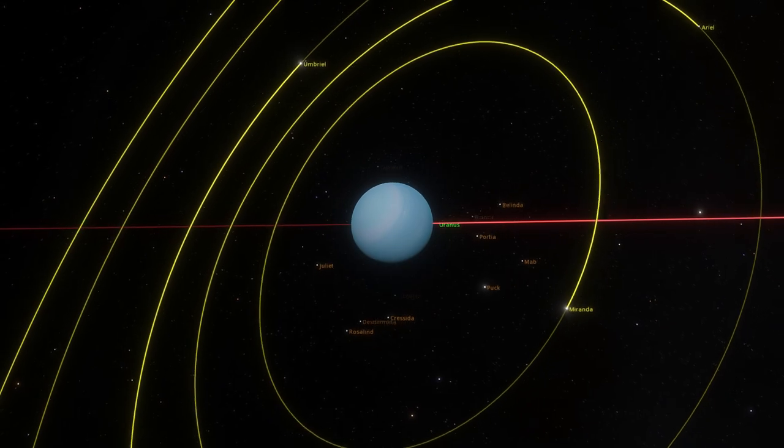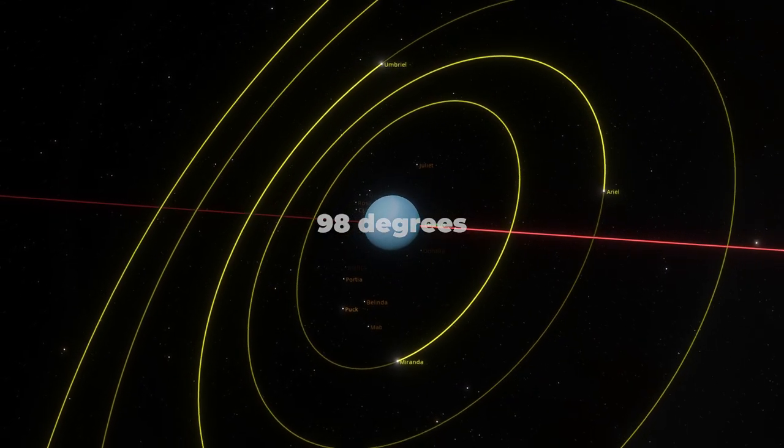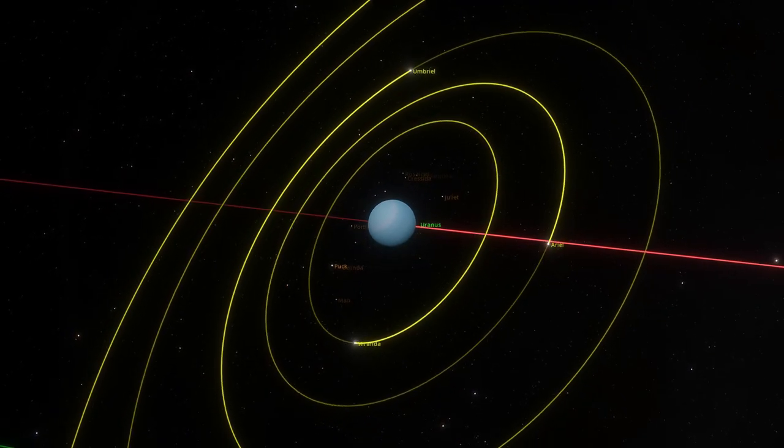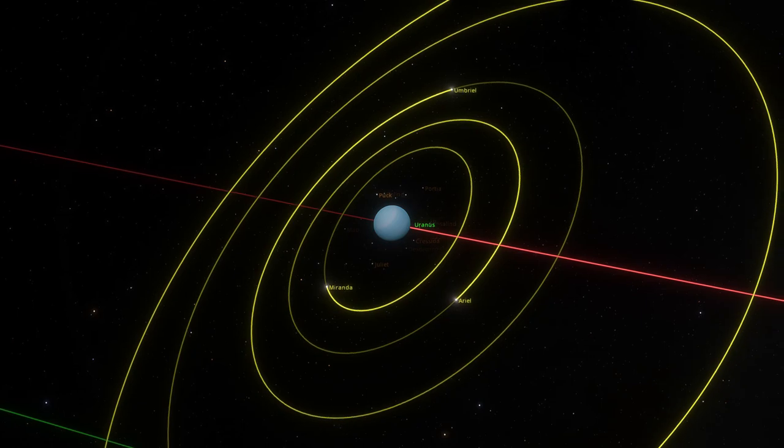However, Uranus is the most mysterious fella. Its tilt of 98 degrees makes it the most extremely tilted planet. It's so tilted, actually, that the planet appears to rotate sideways.